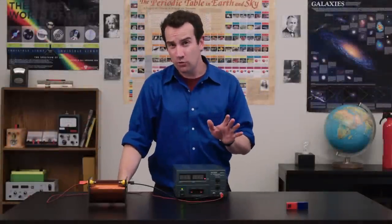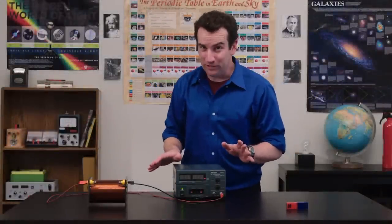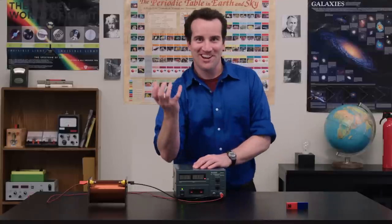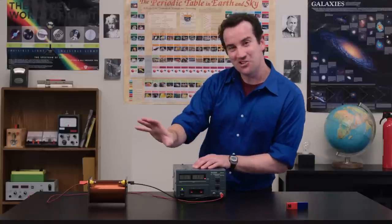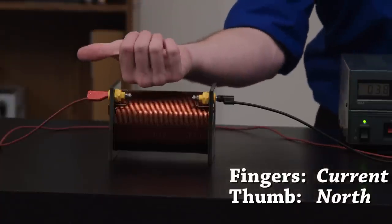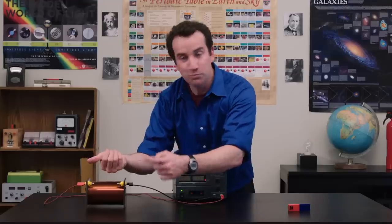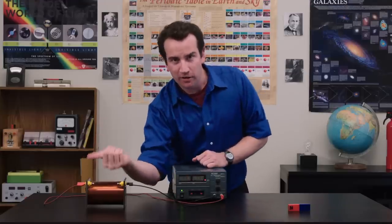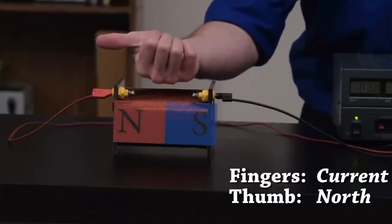But how can we predict what direction the field is pointed? With our right hand. Let your curling fingers be the direction of current flow, which is looping around. Then your thumb is the north end of the electromagnet.